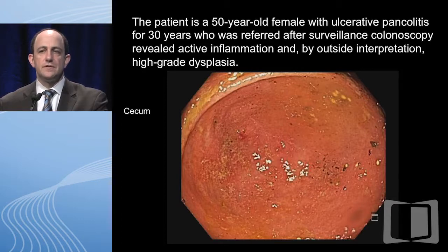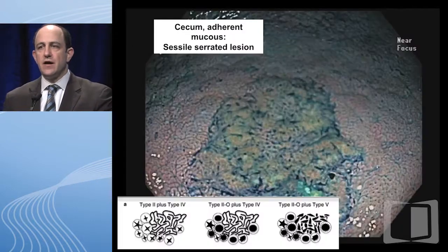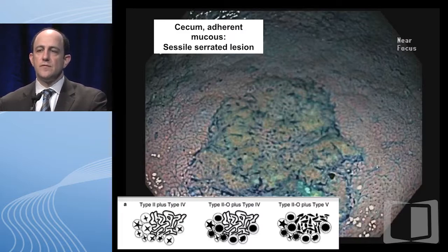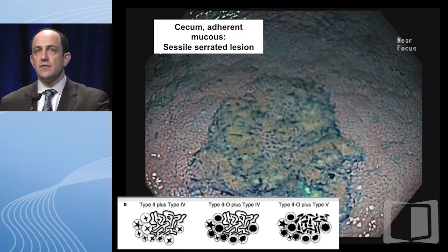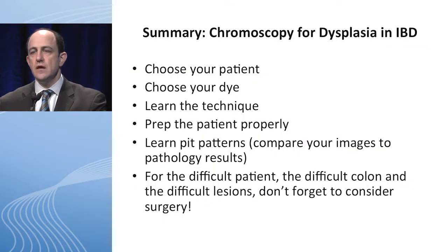A 50 year old female with ulcerative pancolitis for 30 years was referred after surveillance with active inflammation and high-grade dysplasia by outside review. When we got to her cecum there was that adherent mucus I mentioned earlier, and in fact it was a sessile serrated lesion — our review of the outside pathology was not high-grade dysplasia. This again emphasizes the need for expert pathology review as well as your careful review when dealing with these types of lesions.